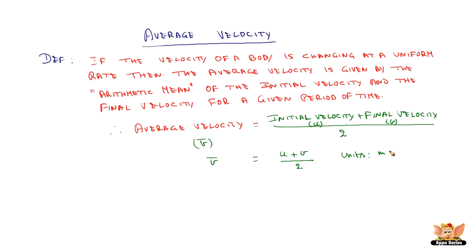The units for average velocity are meter per second or meter second minus 1, and it is a vector quantity as it is nothing but a velocity.